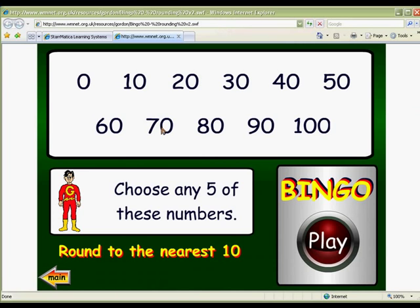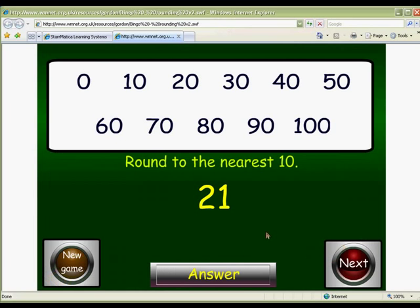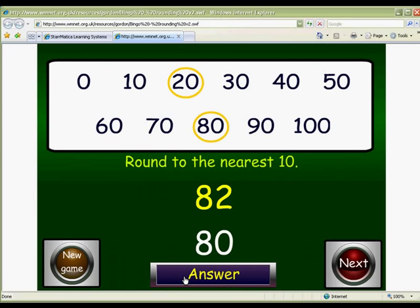Use this whole class bingo game as a fun way to practice rounding to the nearest 10 or the nearest 100. Begin by having each class member write down 5 of the on-screen numbers. Then, have the students round each randomly generated bingo number and mark their sheet if the result is one of their chosen numbers. Create your own bingo cards, or simply name the first person with all five chosen numbers crossed off the winner. Keep this site on hand as your go-to game when you need a quick sponge activity between lessons.